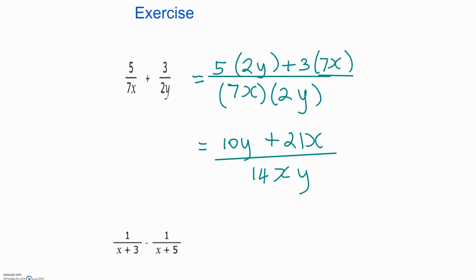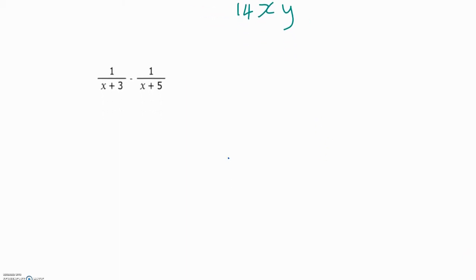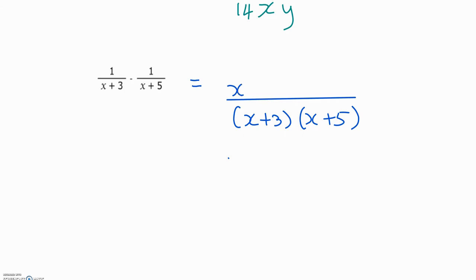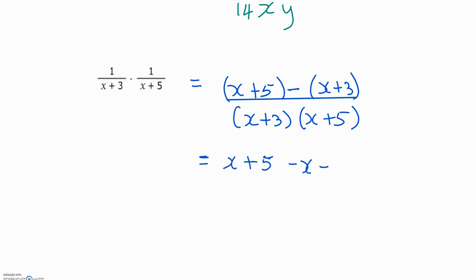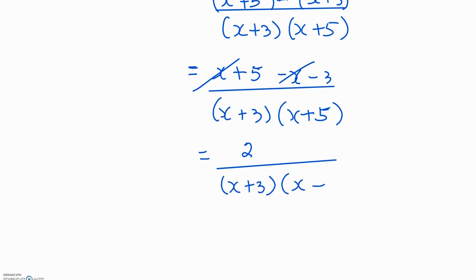For the second question, multiply the two denominators to find the common denominator: x plus 3 times x plus 5. Cross multiplying: x plus 5 times 1 gives you x plus 5, minus 1 times x plus 3. Expanding the brackets: x plus 5 minus x minus 3, all over the common denominator. Simplifying: x minus x cancels out, 5 minus 3 gives you 2, all over the common denominator of x plus 3 times x plus 5. I hope you got your answers right and enjoyed this video — thank you for watching.